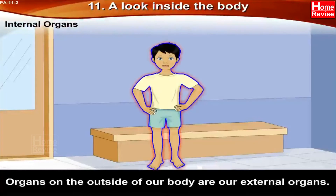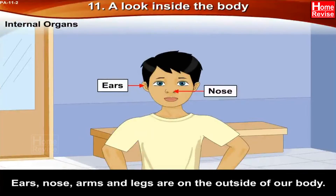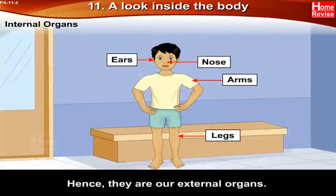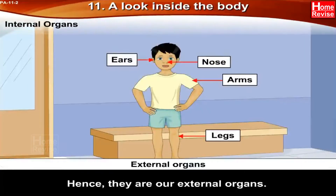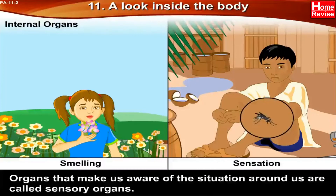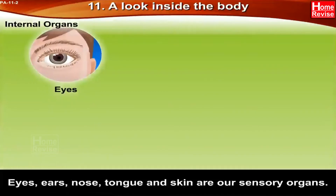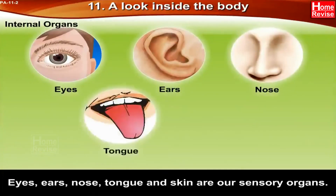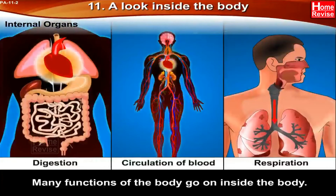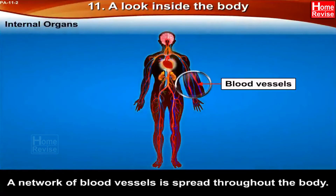Organs on the outside of our body are our external organs. Ears, nose, arms, and legs are on the outside of our body, hence they are our external organs — they can be easily seen. Organs that make us aware of the situation around us are called sensory organs. Eyes, ears, nose, tongue, and skin are our sensory organs.